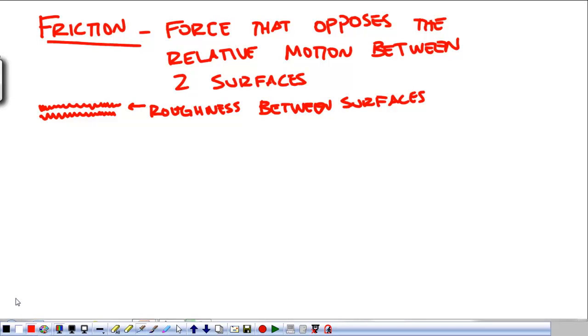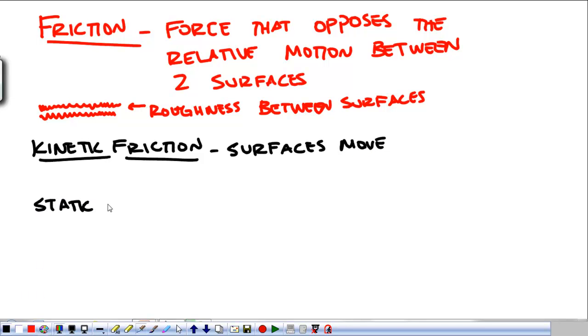Now, we're all familiar with the kind of friction that you get when you slide a book across a table. That is called kinetic friction. Kinetic friction is what you get when the surfaces are moving. The other kind of friction that we have is called static friction. With static friction, the surfaces don't move at all.